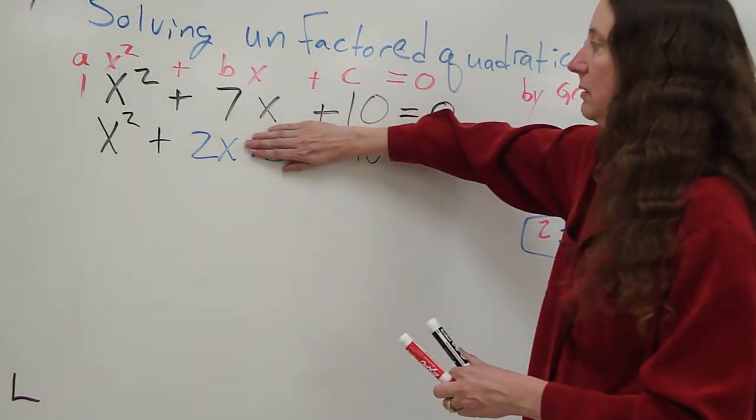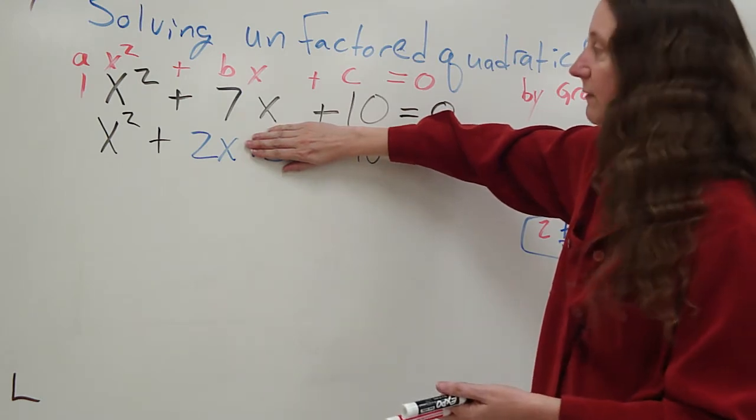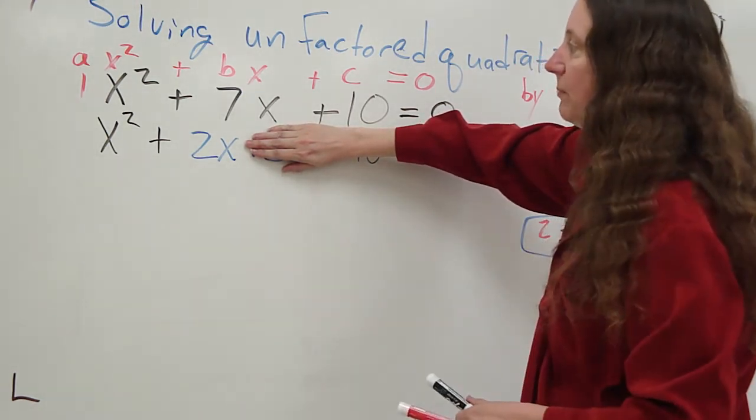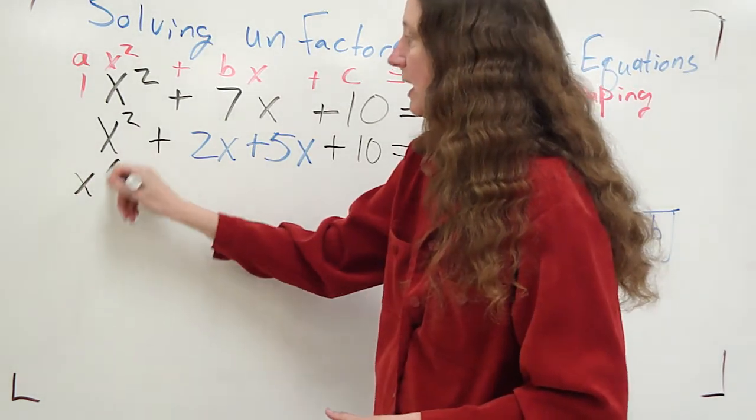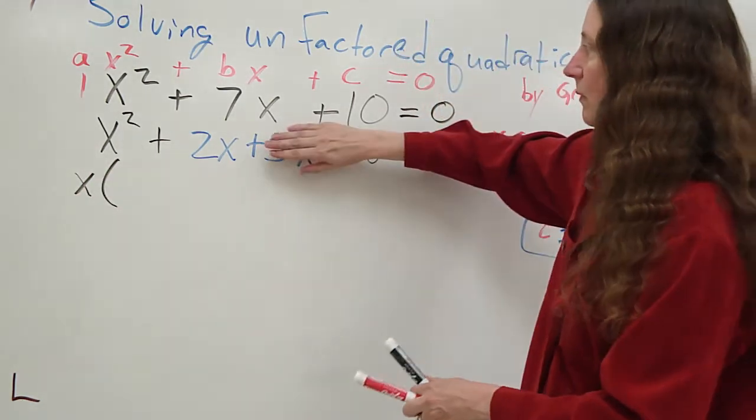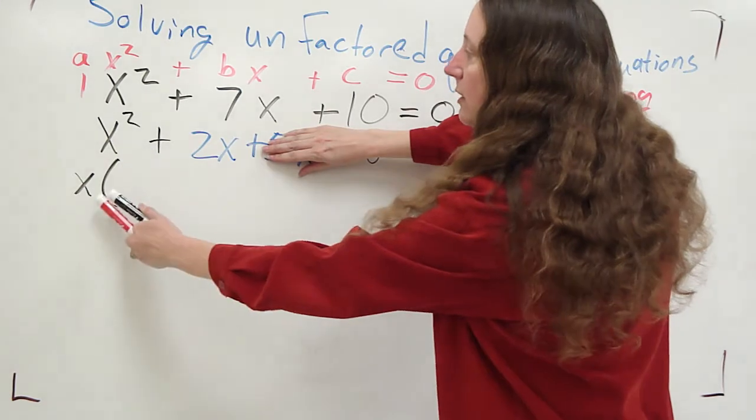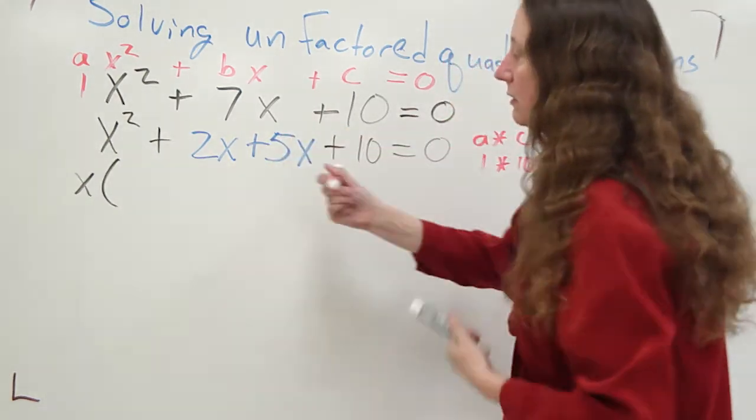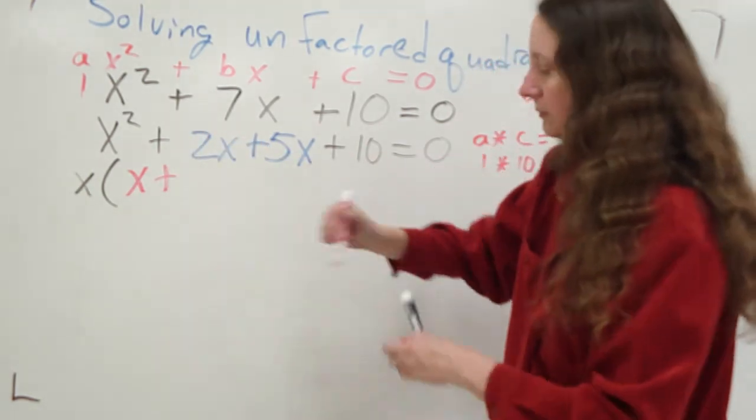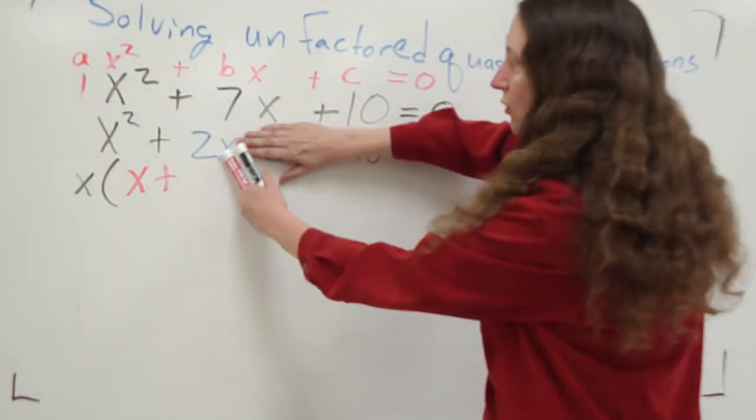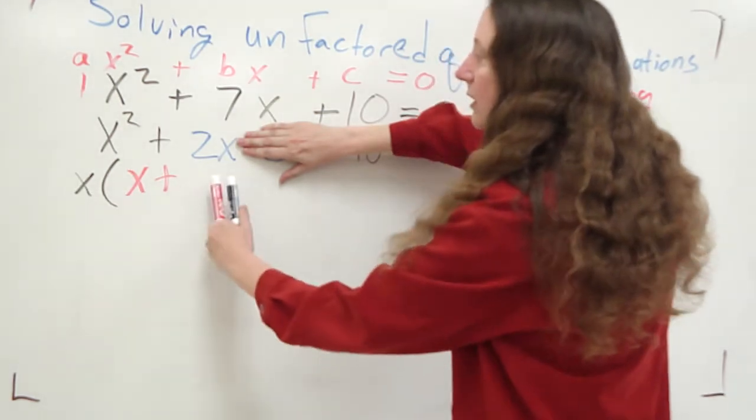I now cover up the second half of this equation and factor something out of here. I see they can both be divided by x. x squared divided by x, carry my plus sign down, 2x divided by x.